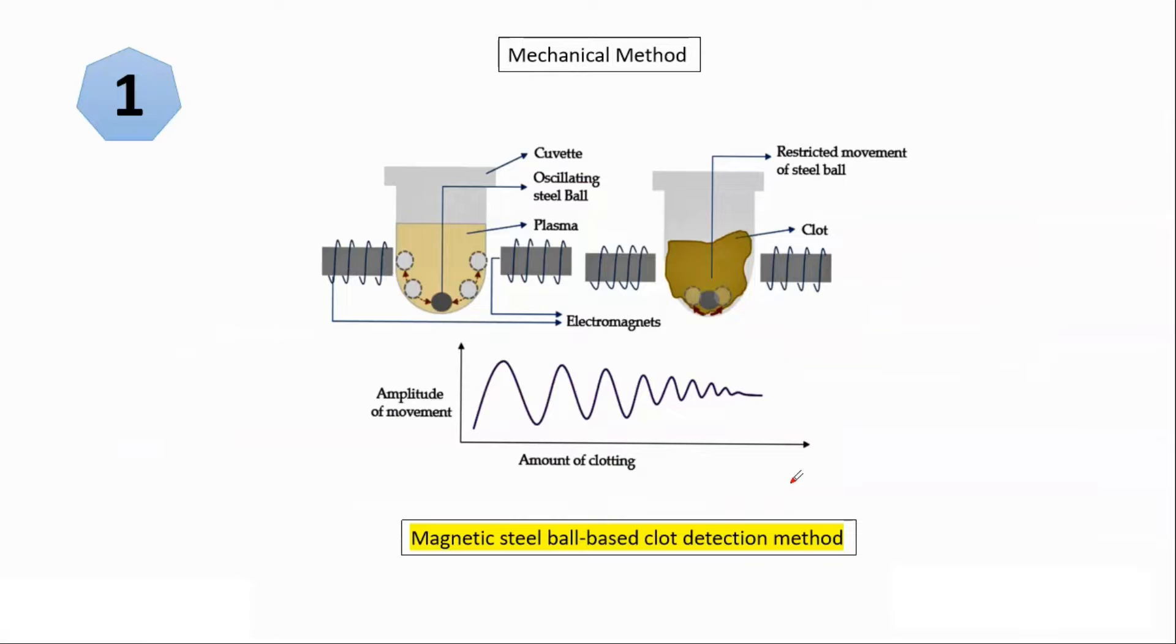So first method, first and most common method which is widely used in automated instrument for coagulation studies. So this is a cuvette or vessel in which we have a stainless steel ball. Here is a magnet, this is the magnet. Here also is the magnet. The principle here is at one point of time this magnet is activated.